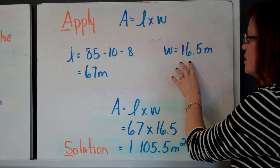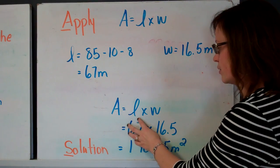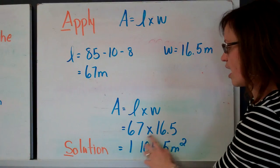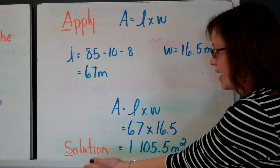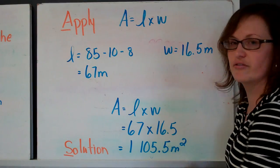The width was given to me, so I can just put it there. Then I go for my required information. Area equals length times width equals 67 times 16.5. So my solution, or my answer, is 1,105.5 meters squared.